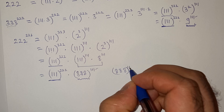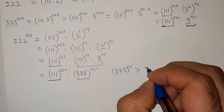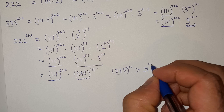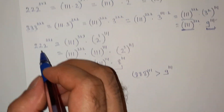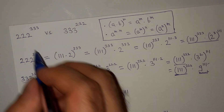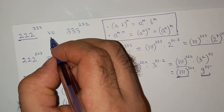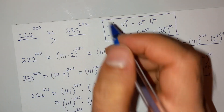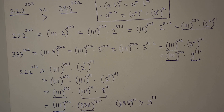This triple 8 power triple 1 is greater than nine power triple 1. So we can say that this number is greater than this number.